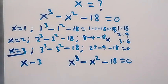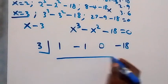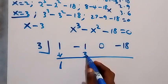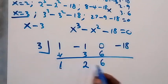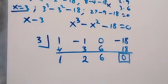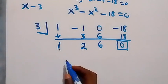Using the synthetic method, we divide using 3. The coefficients are: 1 for x³, -1 for x², 0 for x¹, and -18 for the constant. We drop 1, then 3×1=3; sum: -1+3=2; then 3×2=6; sum: 0+6=6; then 3×6=18; sum: -18+18=0. The remainder is 0, confirming 3 is a root.